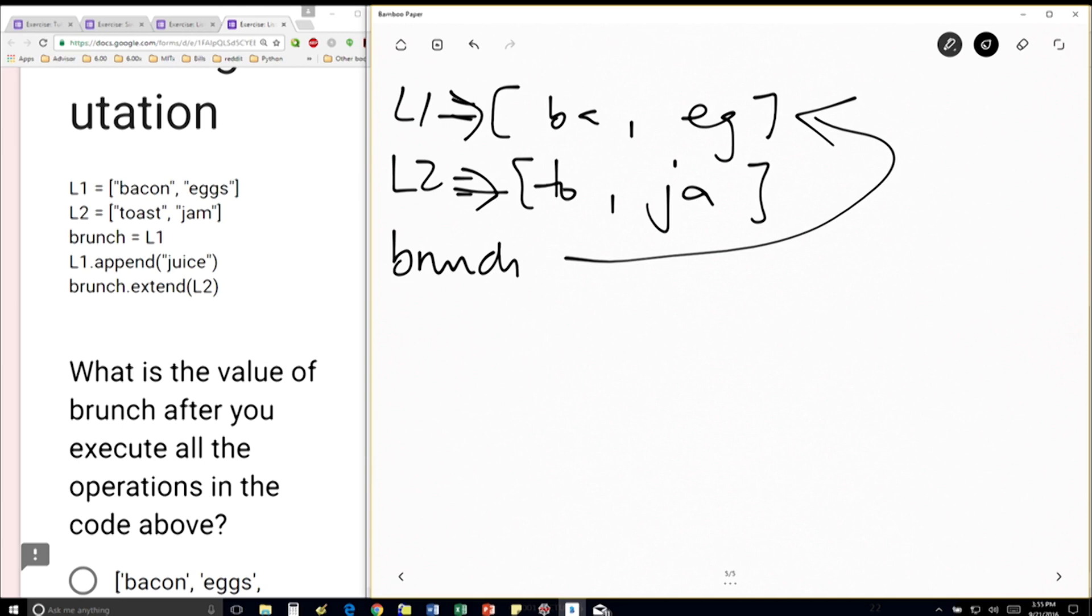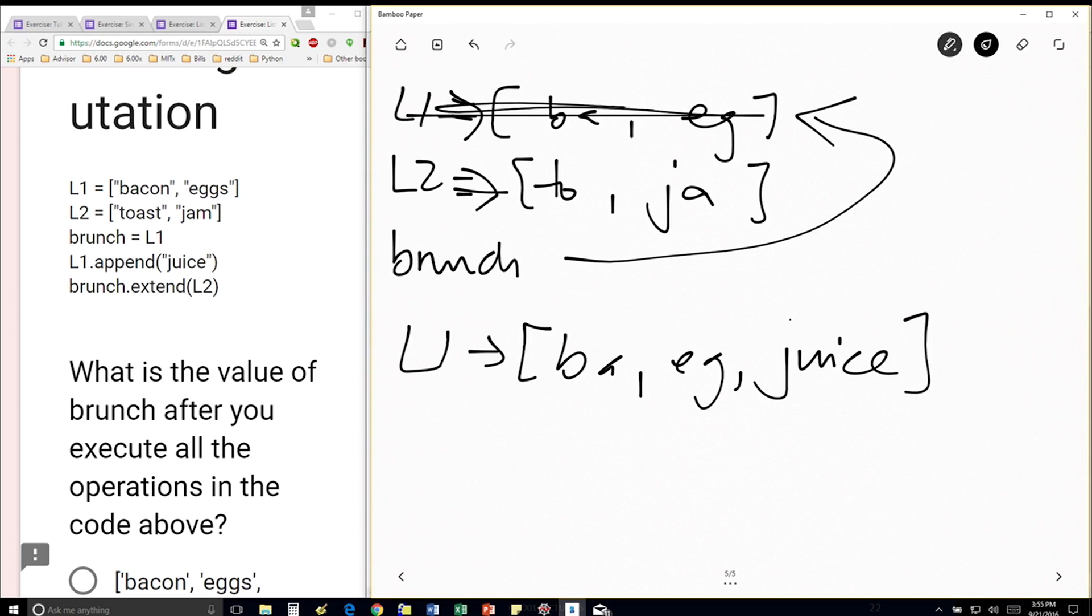And if I do L1.append juice, L1 is now going to be bacon, eggs, and juice. This L1 has been mutated to be that. And since brunch still points to the same object that L1 points to, brunch is now going to point to there.